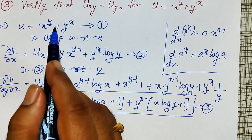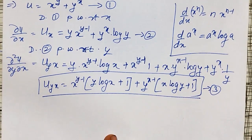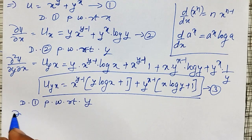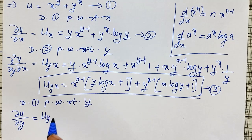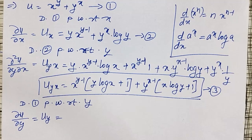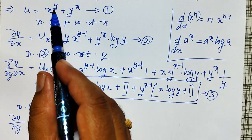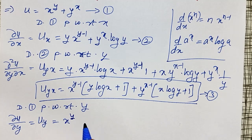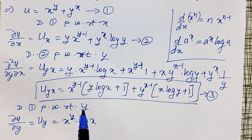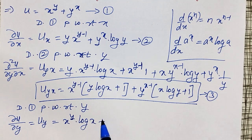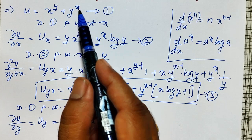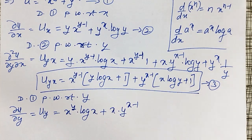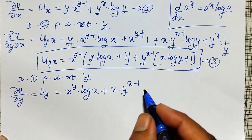To get u_xy, I first differentiate equation 1 partially with respect to y. While differentiating partially with respect to y, x is treated as constant. For the first term x raised to y, using the formula a raised to y gives x raised to y into log x. For the second term y raised to x, since x is constant, it gives x into y raised to x minus 1. This is my u_y. Call this equation number 4.